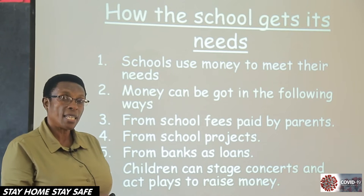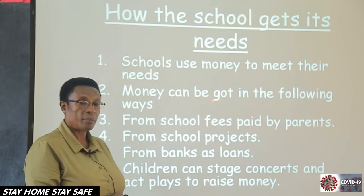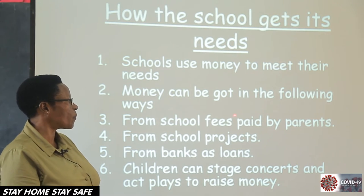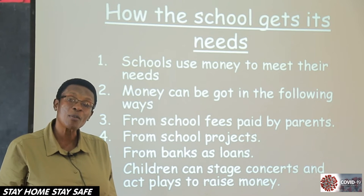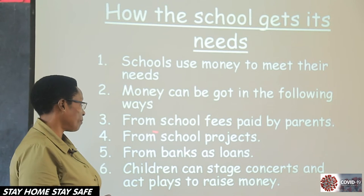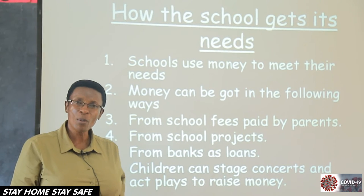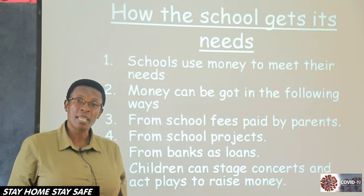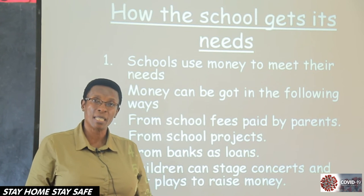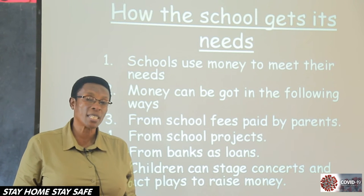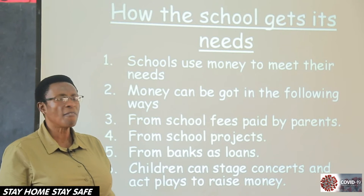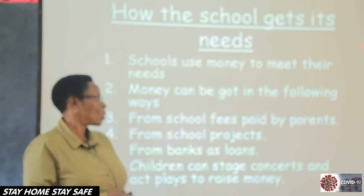Money can be got in the following ways. Number one: from school fees paid by the parents. Your parents pay school fees, and that money helps the school to run. Number two: a school can start projects. Like cattle keeping — a school can have cattle. A school can have a project like poultry keeping, piggery, or rabbit keeping. There are very many projects a school can have in order to get money.